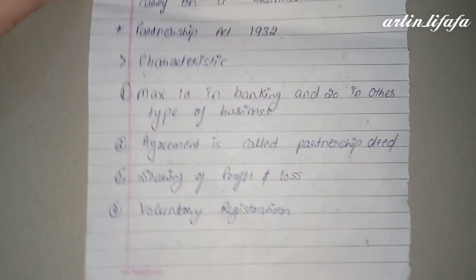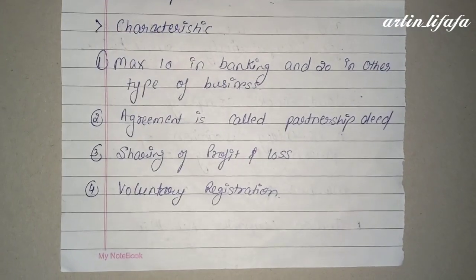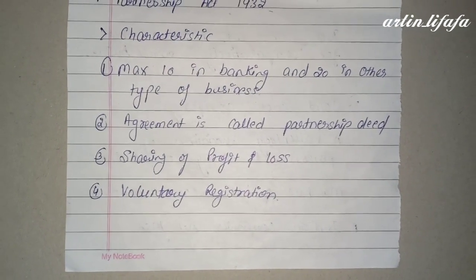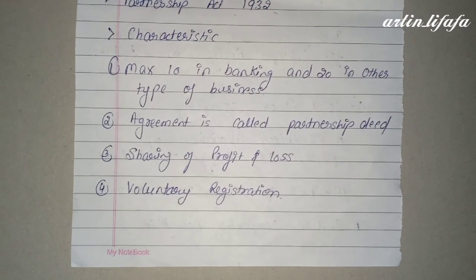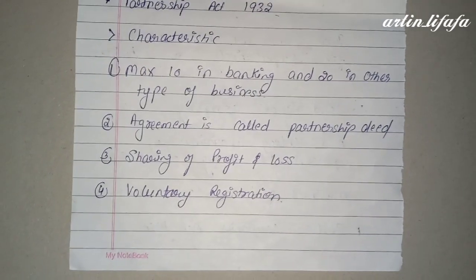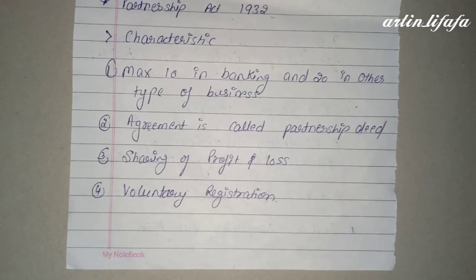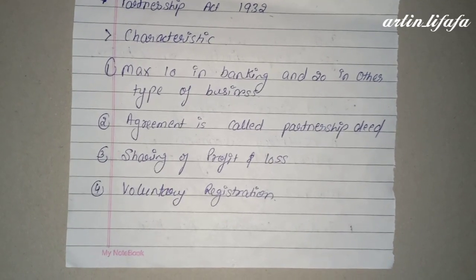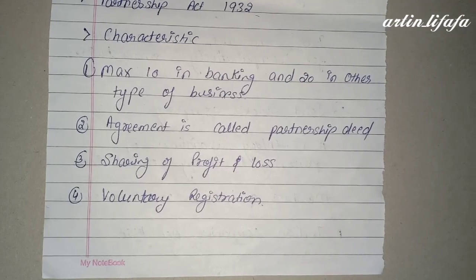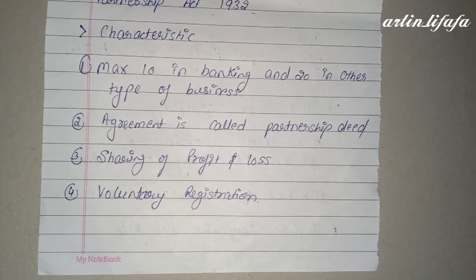Partnership के characteristics में: maximum members 10 होते हैं banking sector में और 20 होते हैं other businesses में। Partnership के अंदर जो भी agreement होता है उसको हम partnership deed कहते हैं।